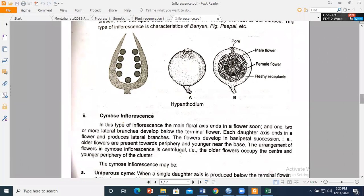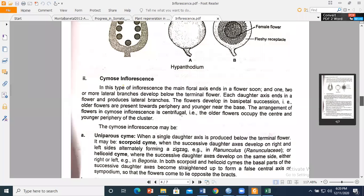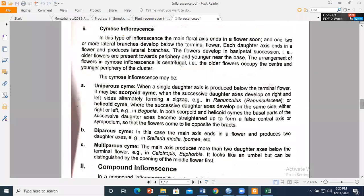Now the second type of inflorescence is cymose inflorescence. In cymose inflorescence, the main axis ends in a flower and terminates growth. Then the lateral branches are produced, which also end in terminal flowers, and then the daughter axis will be produced from the lateral branches.